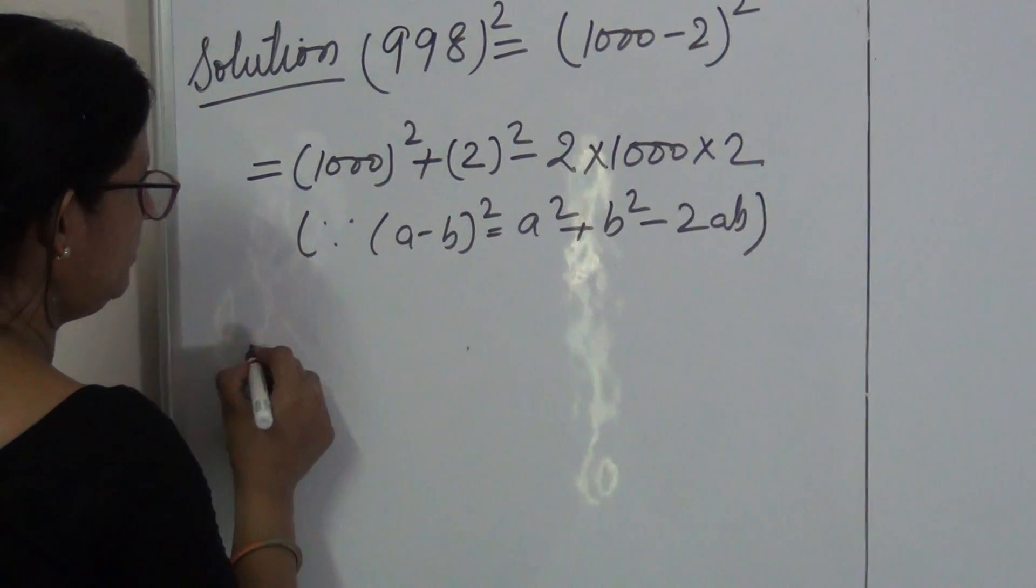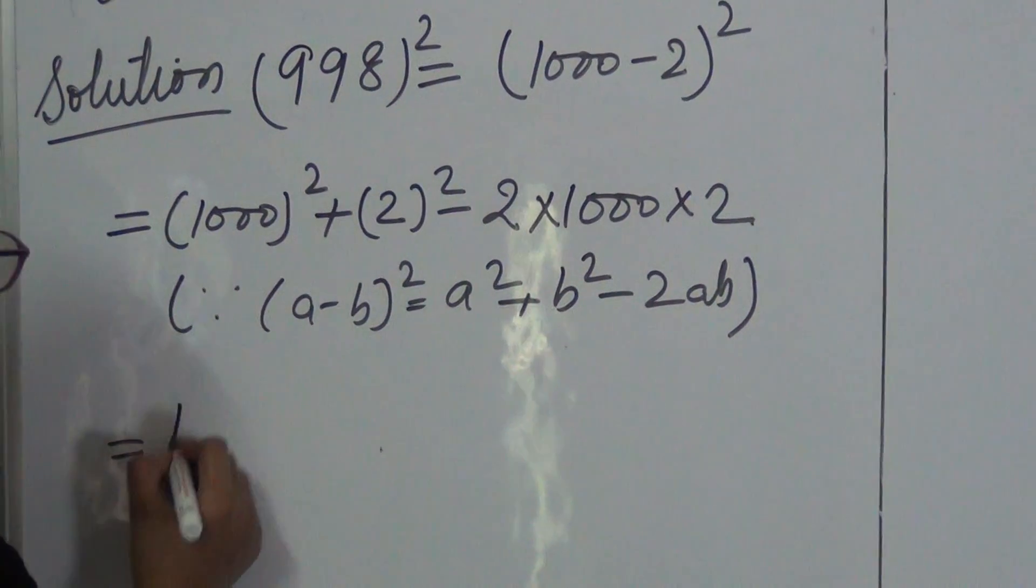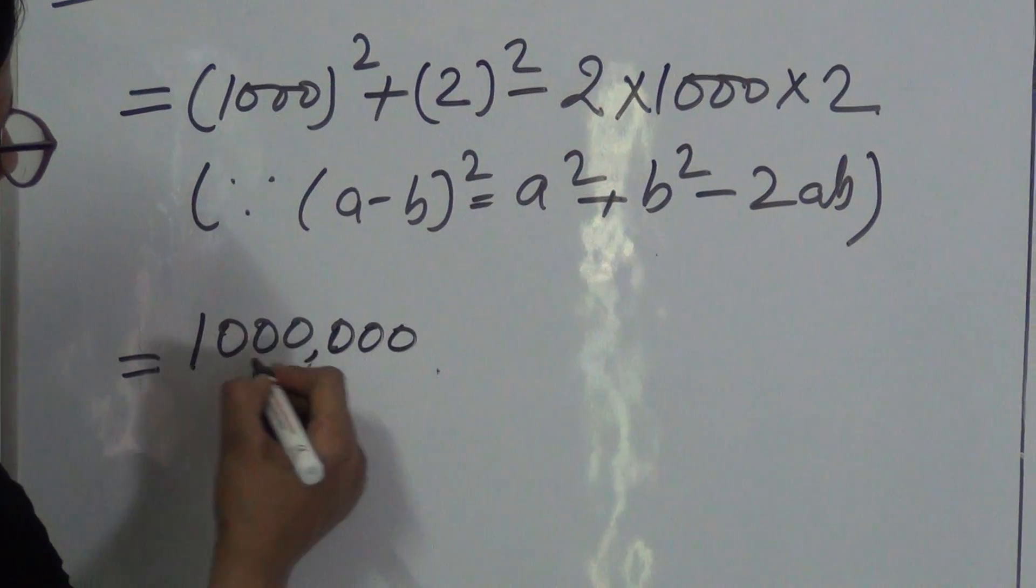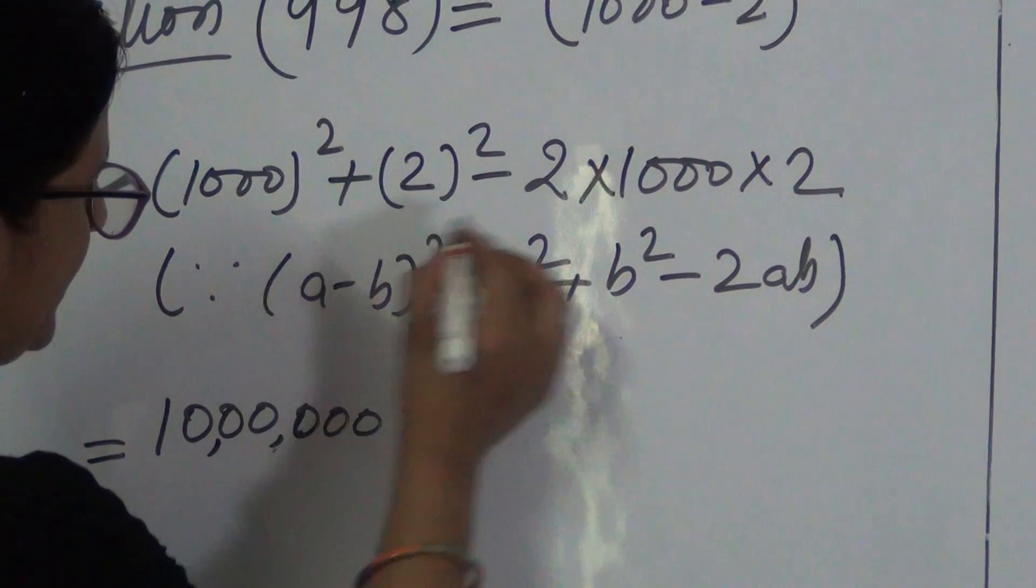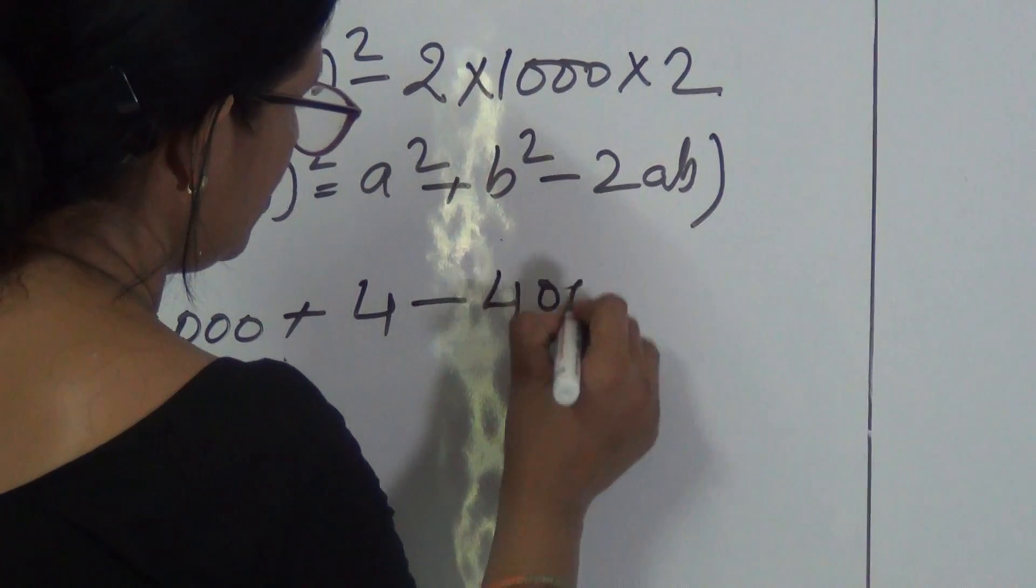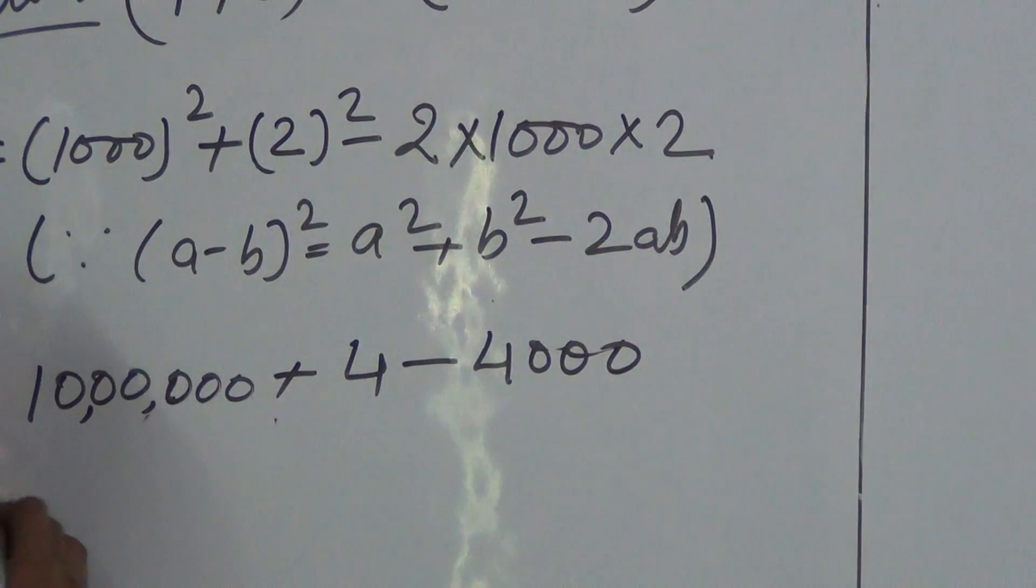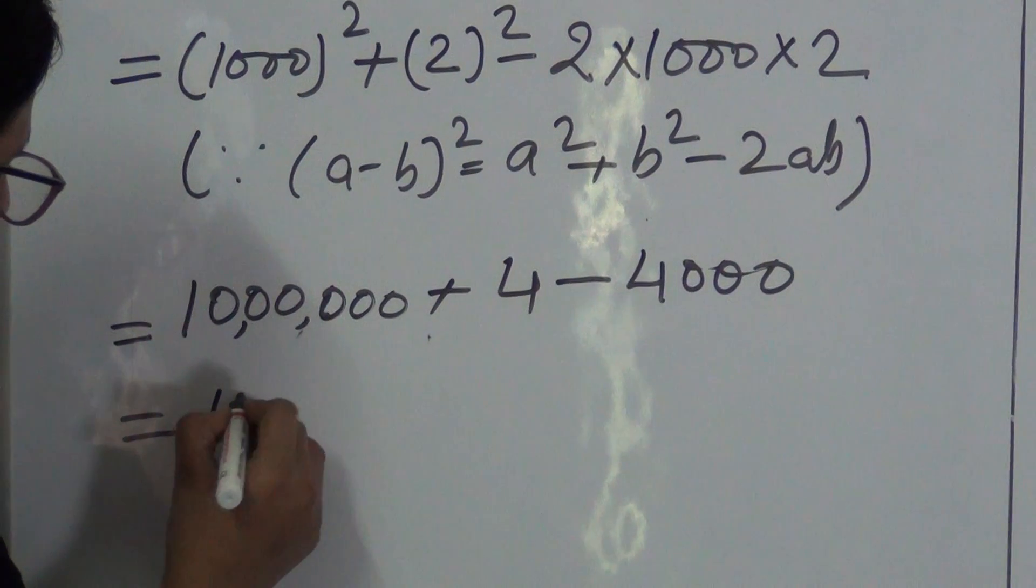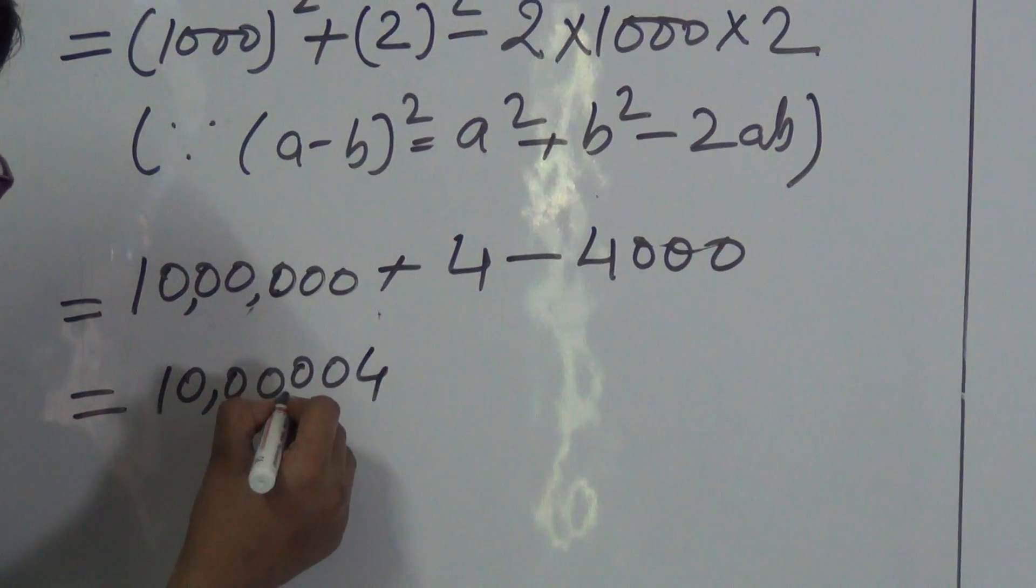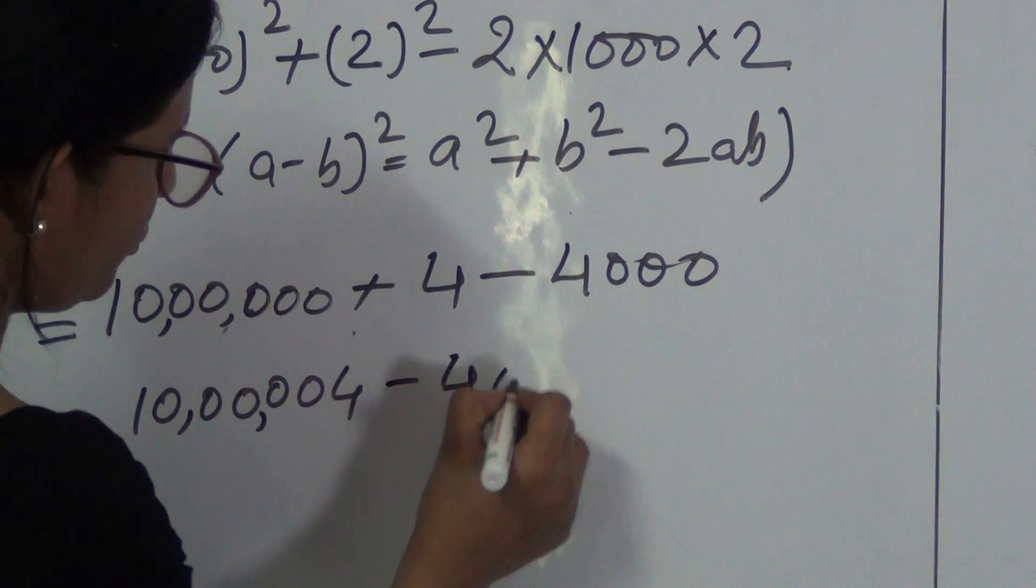This becomes equal to 10 lakh plus 4 minus 4000, which gives us 10 lakh 4 minus 4000.